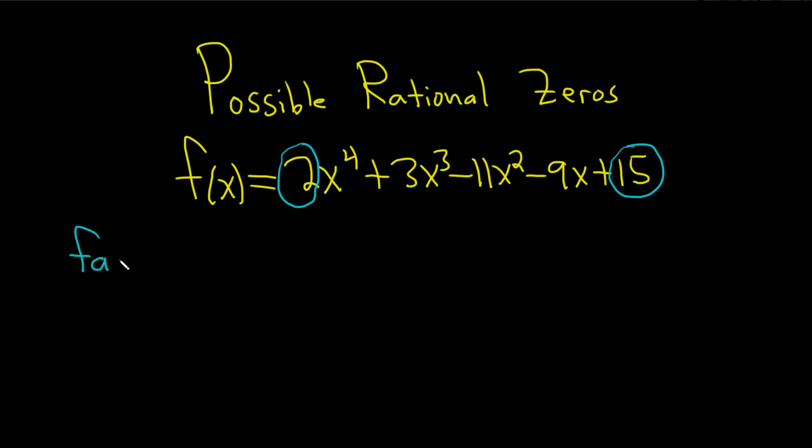It's factors of the last one, so I'll go ahead and write it out. Factors of 15 divided by, and then factors of 2.